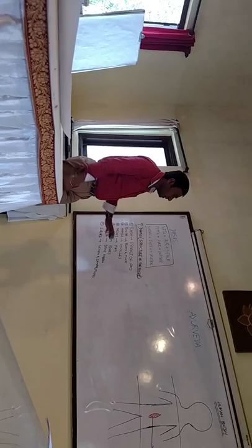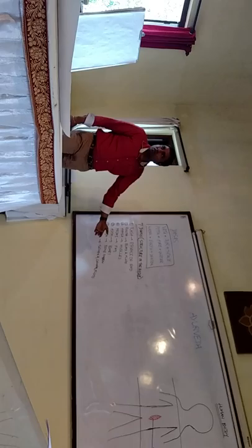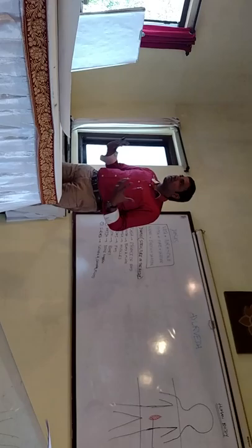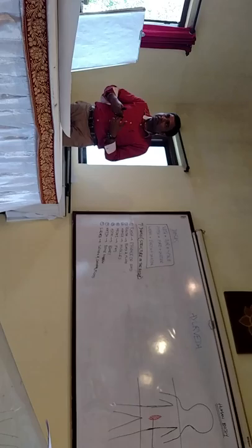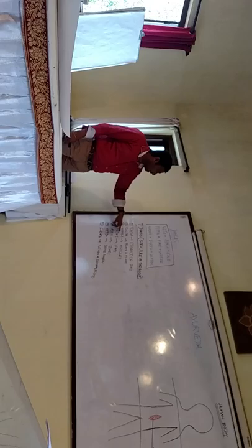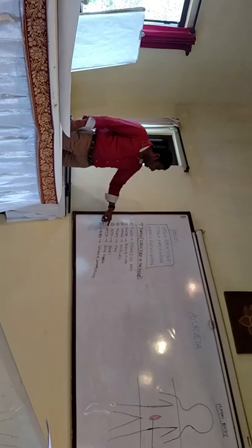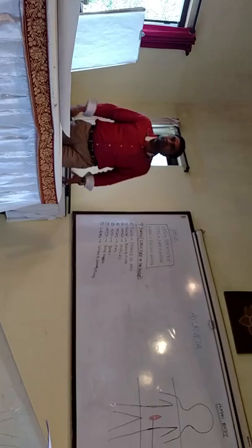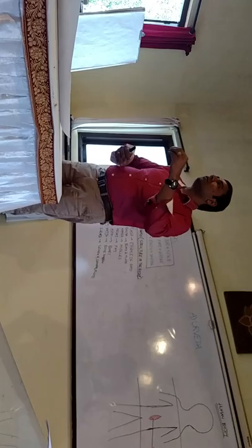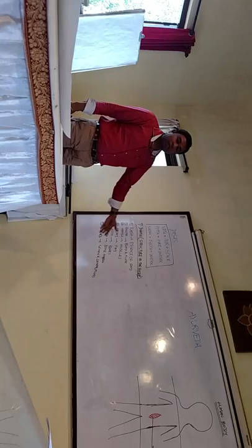And apart from these three Doshas, there is something called seven Dhatus or the structure of the body. What you see in a structure of the body is muscles, bones, fat, blood, everything. So, in Ayurveda, the structure of the body is in seven stages. The first stage is the essence of the food. When we eat food, the first absorption happens. That is the Rasa. Second is the blood and fluids. Third stage is the muscles. Fourth is the Medas or the fat. Fifth is the Asthi or the bones. Sixth is bone marrow. And seventh is Shukra, semen or seminal fluids, which is the deepest tissues of our body.